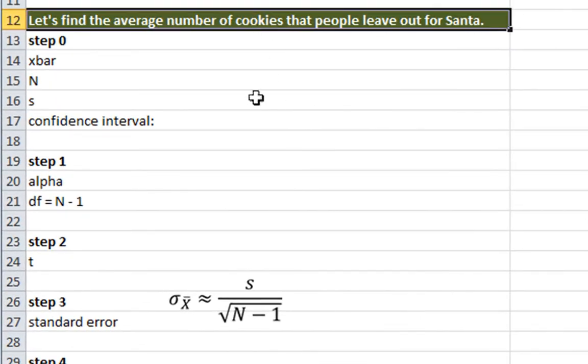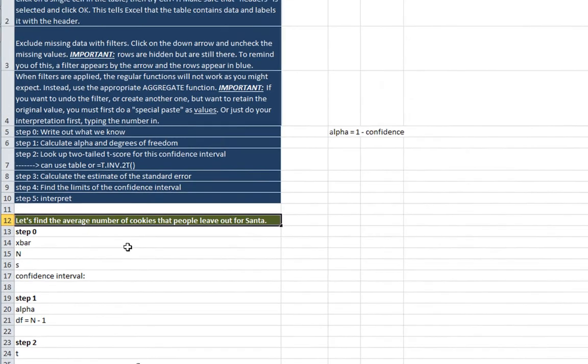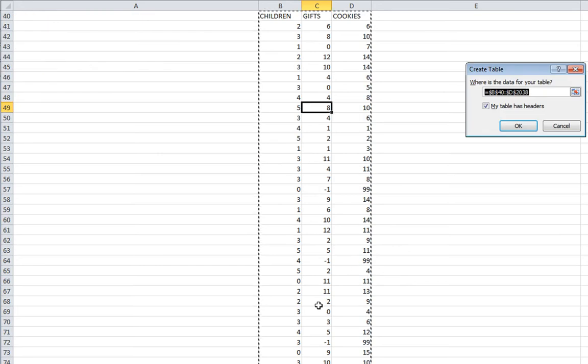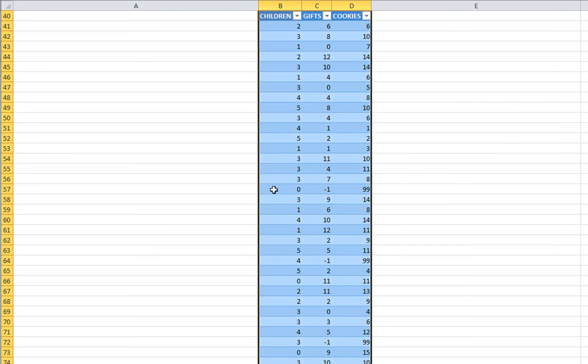For this particular example we're going to find the average number of cookies that people leave out for Santa. The first thing we want to do is designate this as a data table. If you remember from the last video on this topic, we select any one individual cell, hold control and press T. We signal that it has headers. These three words are not interpreted as data. These are the header for each data column. Now we can see that we have a data table here.